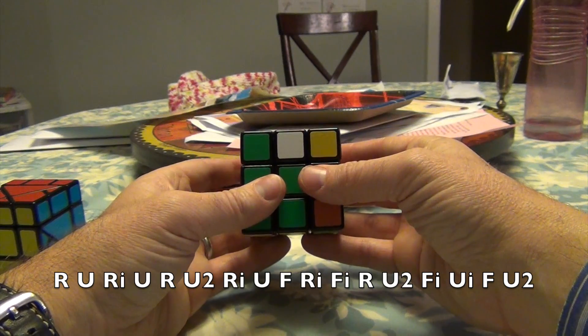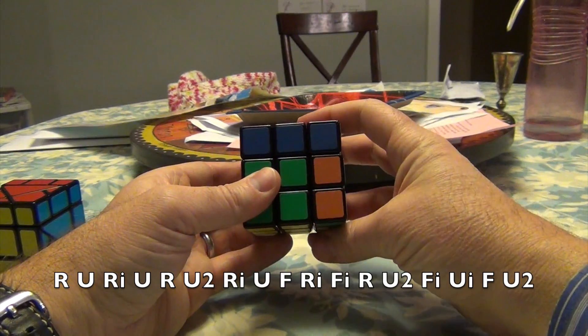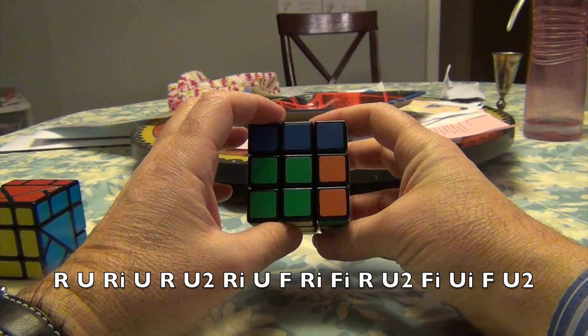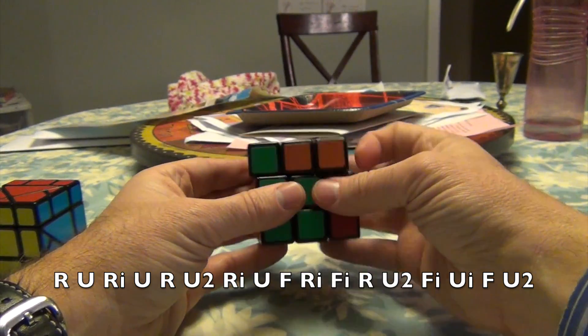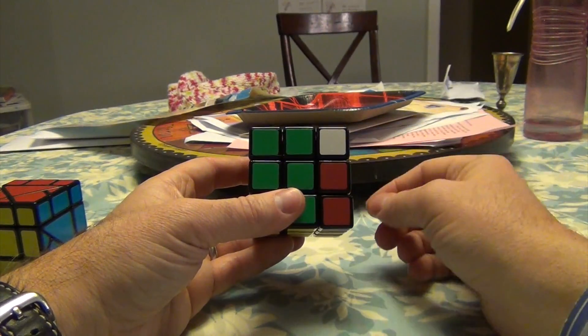R U R' U R2 U R'. Then do a U, and we do a simple commutator of F R' F' R. Then do another bridge of a 2U, and do another reshuffle here, doing F' U' F, and another 2U. And that's it. That's the algorithm.